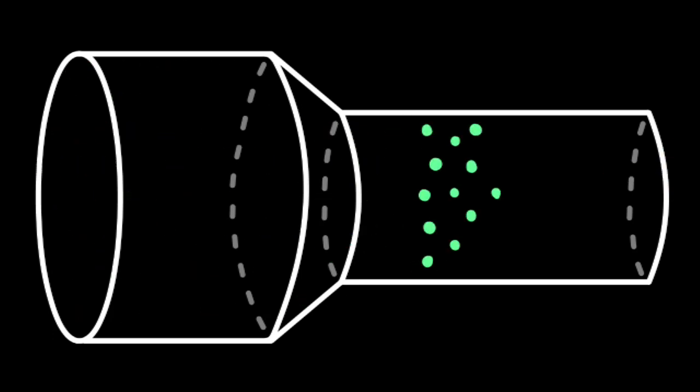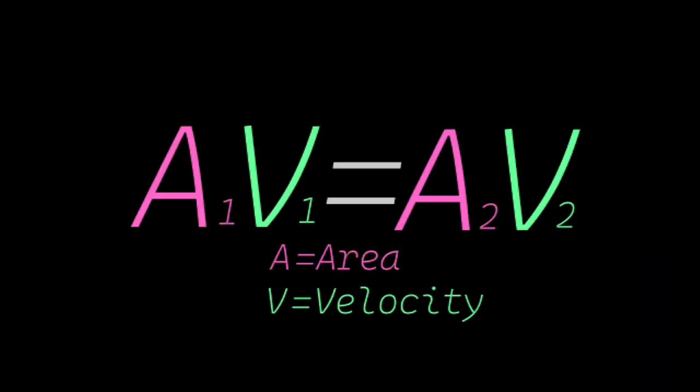So the particles must increase their velocity as they move through the tube to match the rate of fluid flow. This is explained by A1V1 equals A2V2.